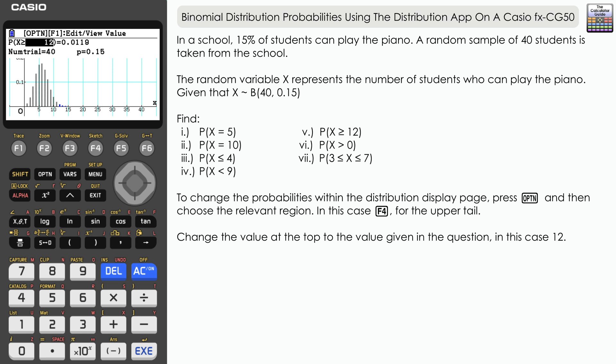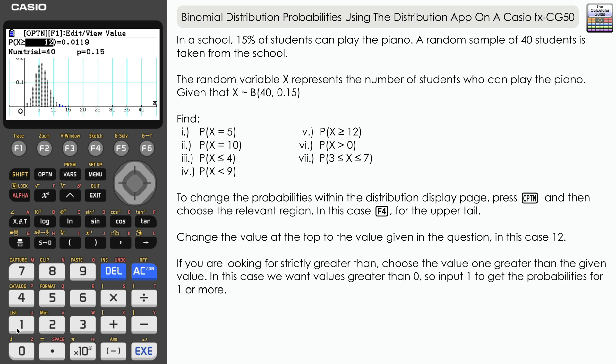And that equals 0.0119, so only just a little bit more than 1% probability that 12 or more in our sample can play the piano. Probability 6 there, X is greater than 0, so we're looking for at least one student who can play the piano in the group. That seems highly likely. So we're just going to input the value of 1 here.